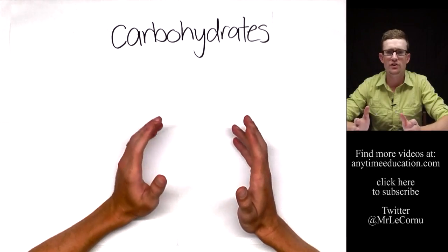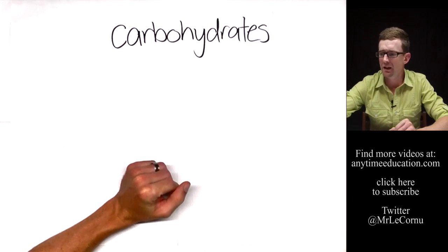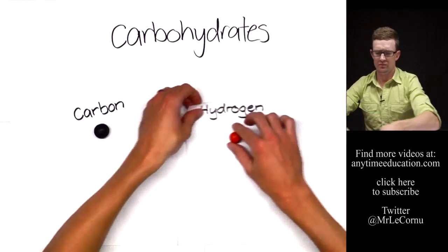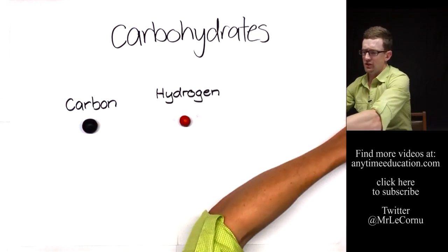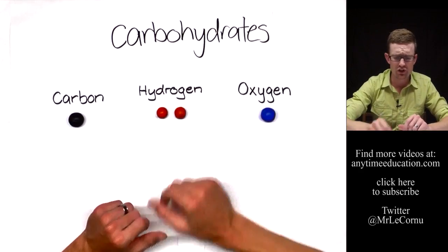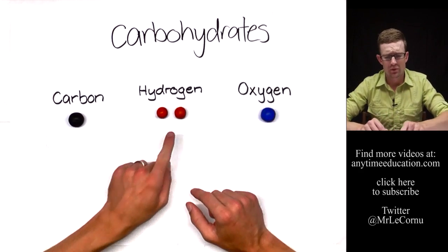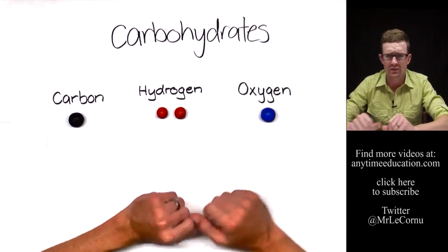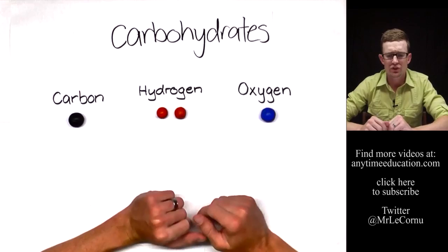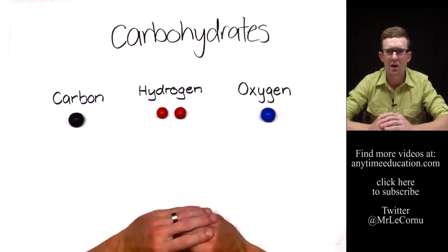Carbohydrates are one of the four major types of organic compounds. They're made up of carbon atoms, hydrogen atoms, and oxygen atoms, and they actually contain twice as many hydrogen atoms as they do oxygen atoms — that's how they get their name. Because two hydrogen atoms to every oxygen atom is like a water molecule, H2O. So we call them hydrated carbons.